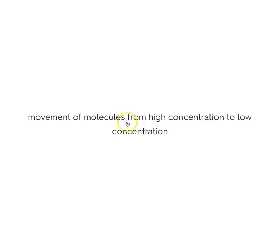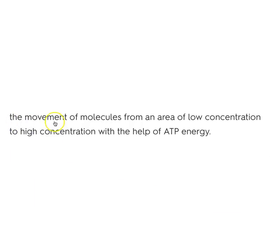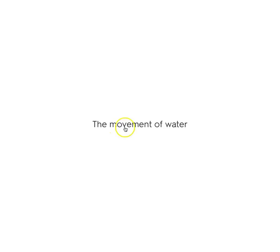Define diffusion: the movement of molecules from high concentration to low concentration across the cell membrane. Define active transport: the movement of molecules from an area of low concentration to high concentration with the help of ATP. Define osmosis: the diffusion of water — the movement of water across the cell membrane.